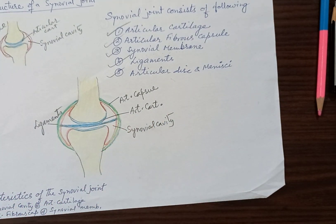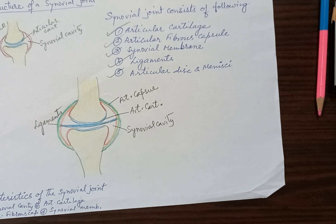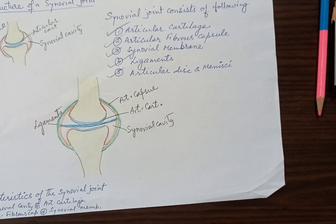This fibrocartilaginous disc is seen, for example, in the temporomandibular joint or sternoclavicular joint. There may also be some incomplete discs called labrum or menisci. At this stage, understand that sometimes there may be an articular disc between the two articulating bones — a complete disc dividing the joint cavity into two compartments, or an incomplete disc present only at the margin called menisci. These articular discs and menisci are present in joints which have to exert much more force — they act as shock absorbers, just like articular cartilage, and help in lubrication of the articular surface.